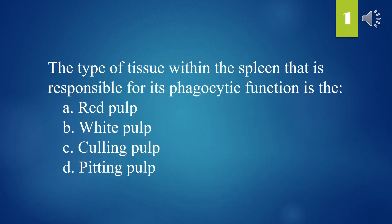The type of tissue within the spleen that is responsible for its phagocytic function is: A. Red pulp. B. White pulp. C. Culling pulp. D. Pitting pulp. The answer is A. Red pulp.